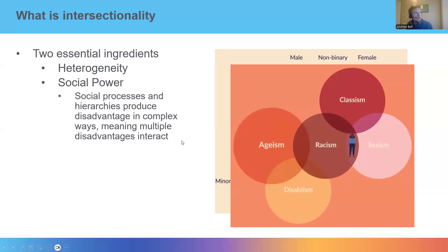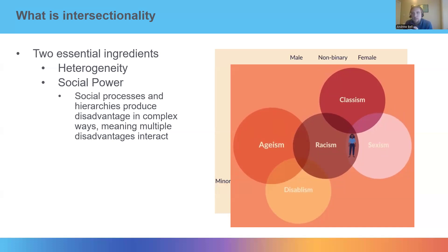The second dimension of intersectionality is social power — the idea that some of what produces those inequalities relates to social processes and hierarchies. These social processes combine in often complex ways. There may be ageism and racism that disadvantage minoritized groups, and sexism that disadvantages women, but these might combine in particular ways. For instance, it might be that black women experience disadvantage as a result of a particular combination of sexism and racism.